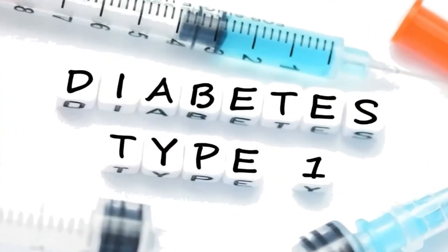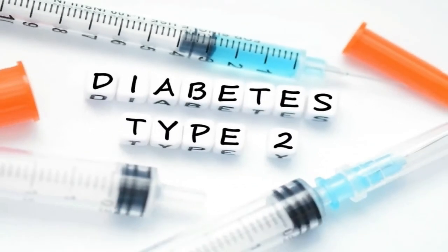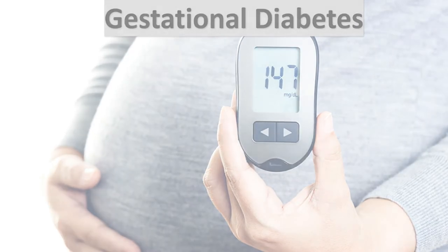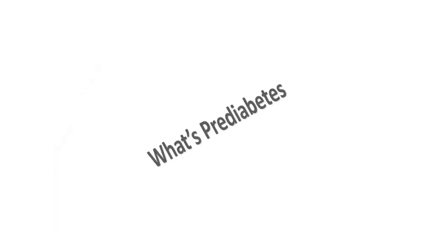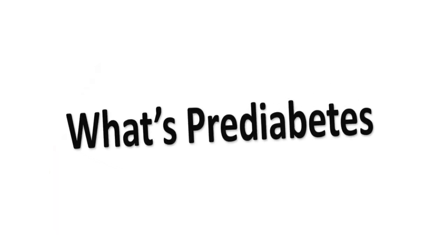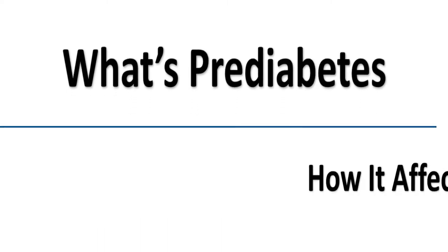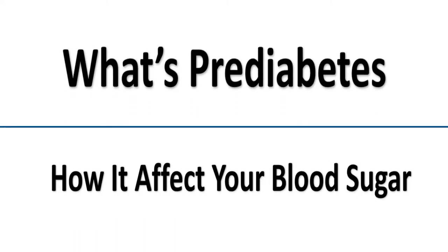There are three known types of diabetes: type 1, type 2, and gestational diabetes. But before we proceed any further, let's understand what prediabetes is and how it affects your blood sugar.